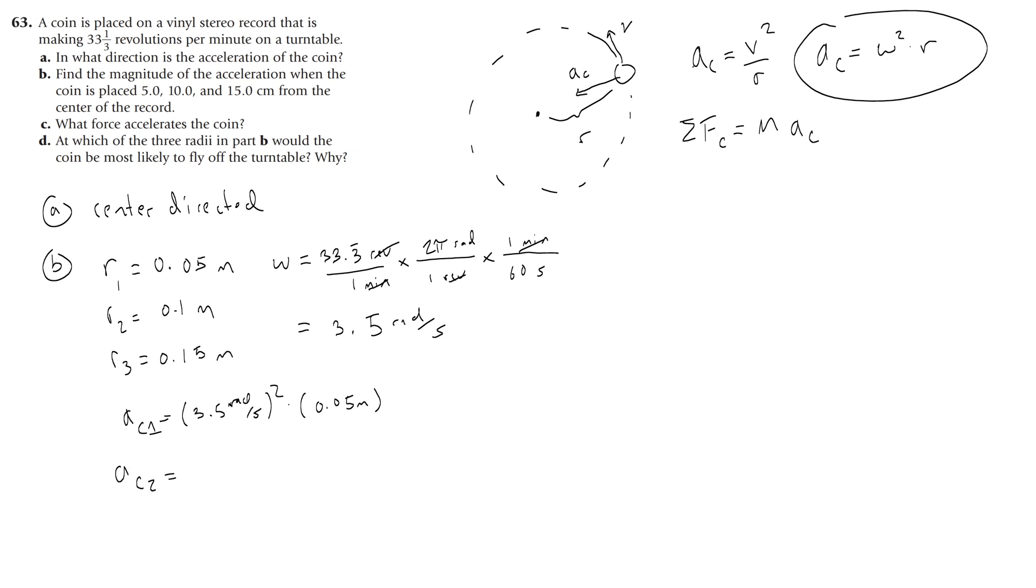The centripetal acceleration for 2, 3.5 radians per second, the whole thing squared times 0.1 meters. And I think you get the pattern, okay, 0.15 meters.